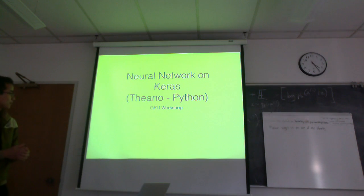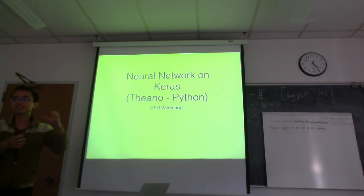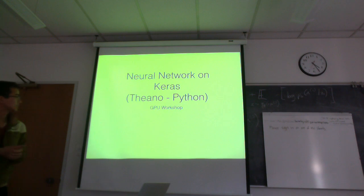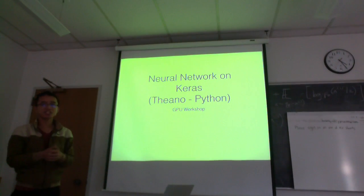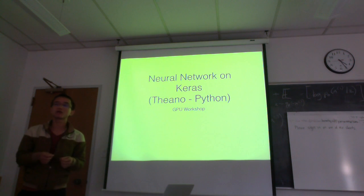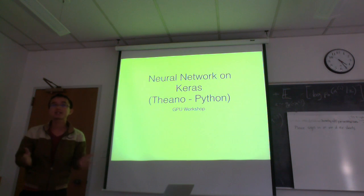I'm going to showcase a toy example using a recurrent neural network to generate text character by character. The example is taken from the Keras package. Keras is built upon Theano, which is a Python package. The advantage of Theano is it will do automatic differentiation for you — if you define the loss function, Theano gives you the derivative, and you can do gradient descent to train the neural network.